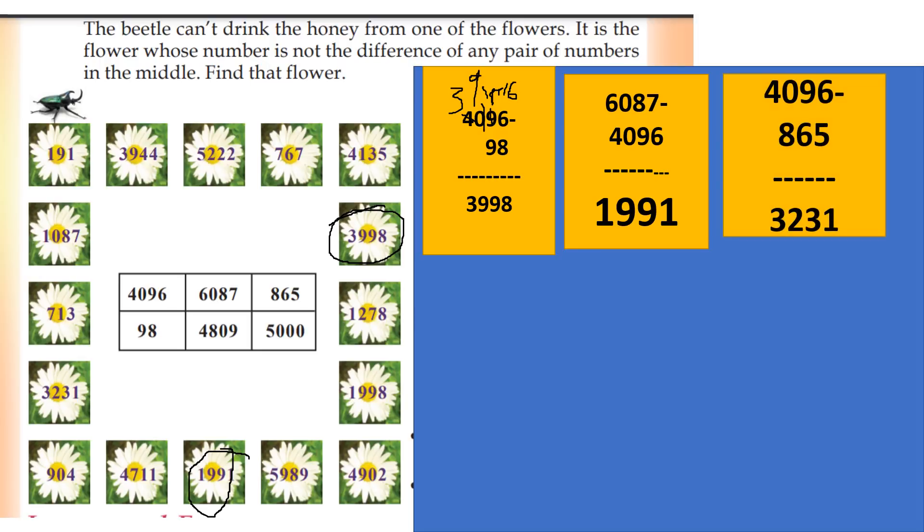Now 4096 minus 865. 6 minus 5 is 1, 9 minus 6 is 3, 10 minus 8 is 2. So that's 3231.